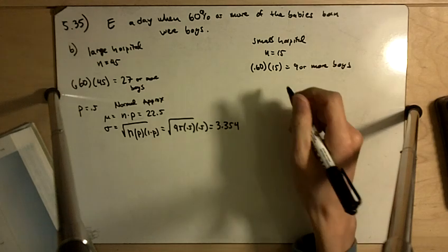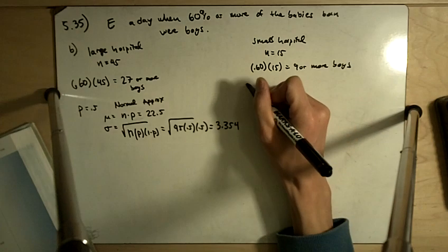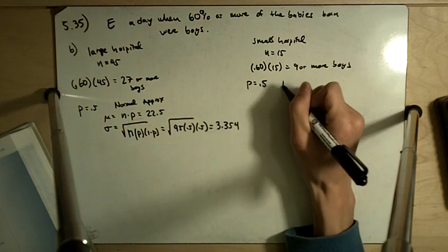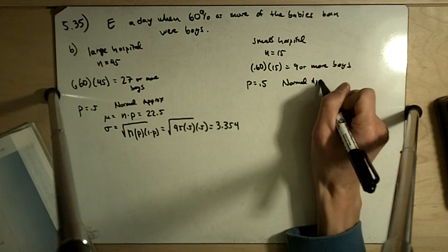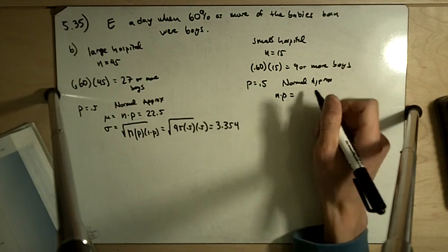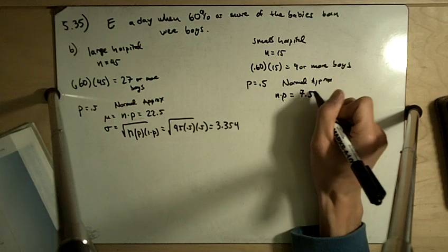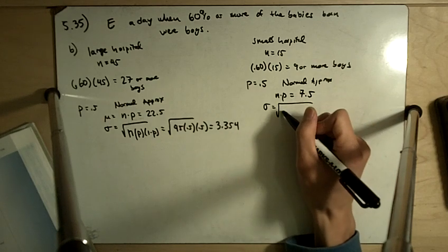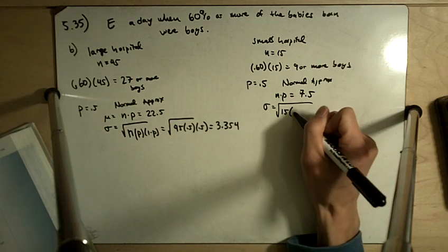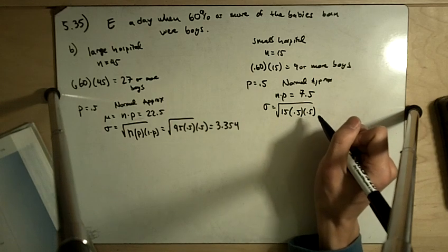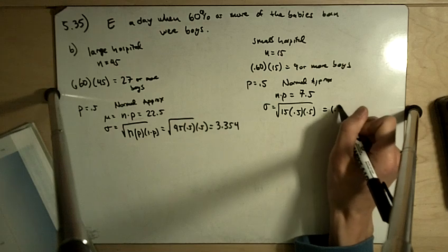And on this side, we're still expecting about half to be boys, half to be girls. And for our normal approximation, we've got N times P is equal to seven and a half boys, and sigma is going to be equal to the square root of 15 times 0.5 times 0.5, and that gives us 1.936.